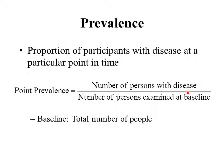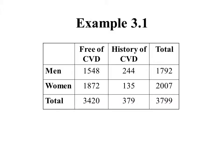This term baseline we're going to see come up a lot in the book as well as our journal readings. The term baseline has maybe different meanings depending on the context, but informally we could think of baseline as simply the total number of people.